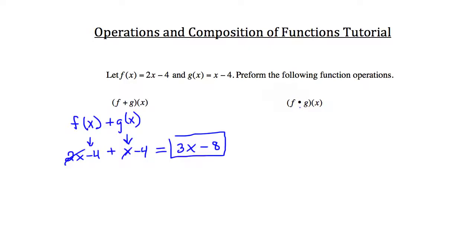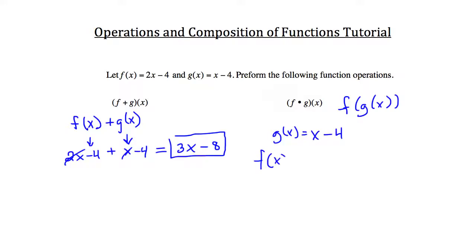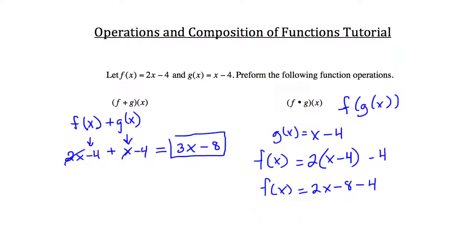Now let's look at f of g of x. We're going to take our input from g of x and put that into f of x. Since g of x is x minus 4, we plug that into f of x. So 2 times x is 2x, and 2 times negative 4 is negative 8, minus another 4. So f of g of x equals 2x minus 12.